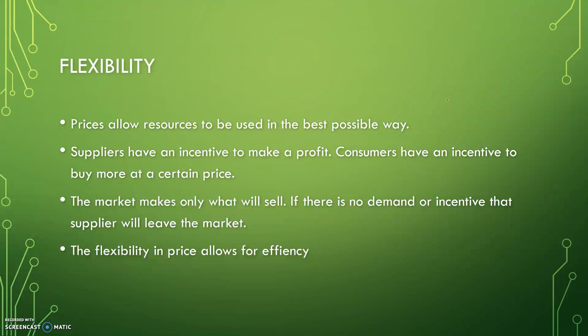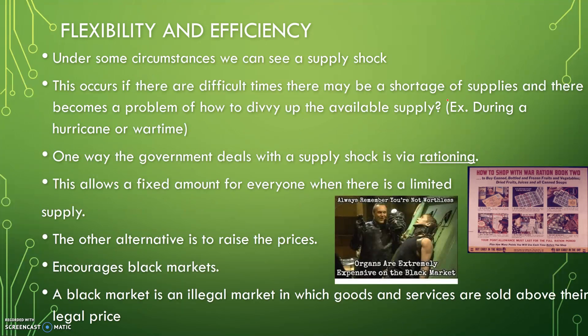Flexibility in prices allows resources to be used in the best possible way. Suppliers have an incentive to make profit, consumers have an incentive to buy more at a lower price, and the market makes only what will sell. If there is no demand or incentive, the supplier will leave the market. Flexibility in price allows for efficiency. Under some circumstances, we can see a supply shock — if there are difficult times, there may be a shortage of supplies, creating a problem of how to divvy up the available supply, such as during a hurricane or wartime.